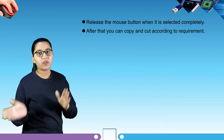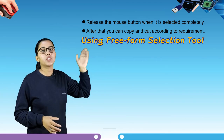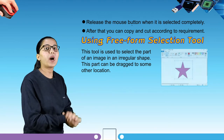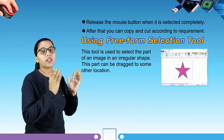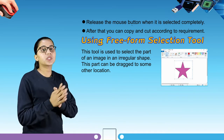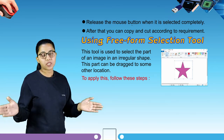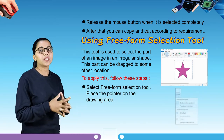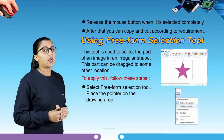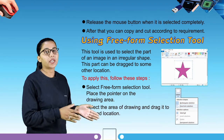Now let's jump to the free form selection tool. This tool is used to select the part of an image in an irregular shape; this part can be dragged to some other location. To apply this: select the free form selection tool, place the pointer on the drawing area, select the area of drawing and drag it to the desired location.